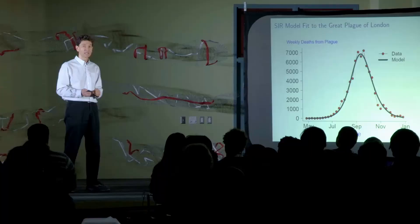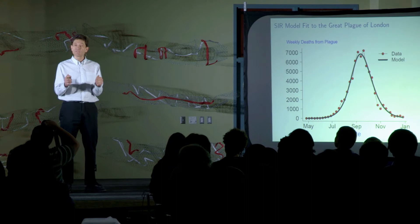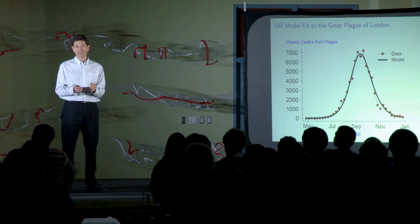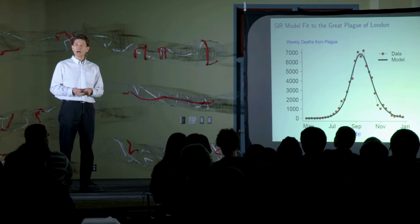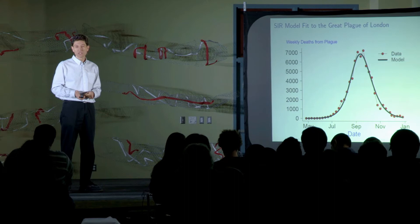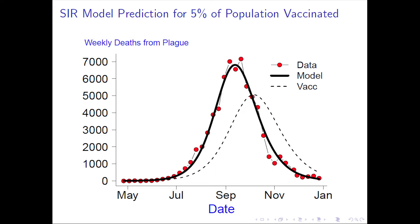Once we've fit that model, we're in a really strong position, because we have a model that seems to explain the character and structure of an epidemic, and we can then change things within the model to ask what would have happened if we could have intervened. For example, suppose that a vaccine had been invented — maybe only 5% of the population could have been protected. It would have had a shallower rise, the peak wouldn't have been as high, and fewer people would have died. We can do exactly this type of thing with any fitted model to ask how we might deal with this disease if it were to invade the population again, and design better control strategies using mathematical models on a computer.